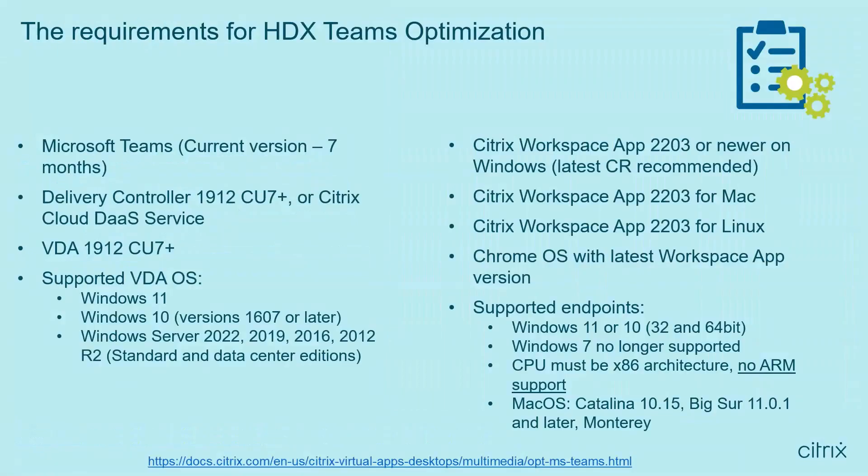For Teams optimization to work correctly, here's what is required. Starting with Teams itself, the minimum version needed is the current version minus seven months. The delivery controller needs to be at version 1912 CU7 or later. If you're running Citrix DAS, since the infrastructure is managed and maintained by Citrix, there are no versions to worry about there. For the VDAs, version 1912 CU7 or later is required as well.